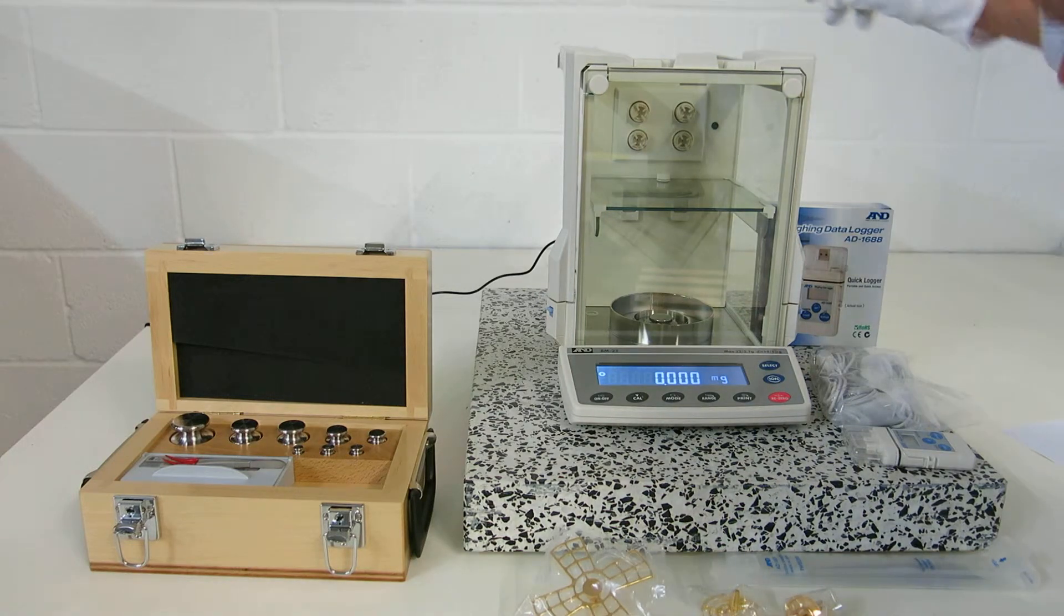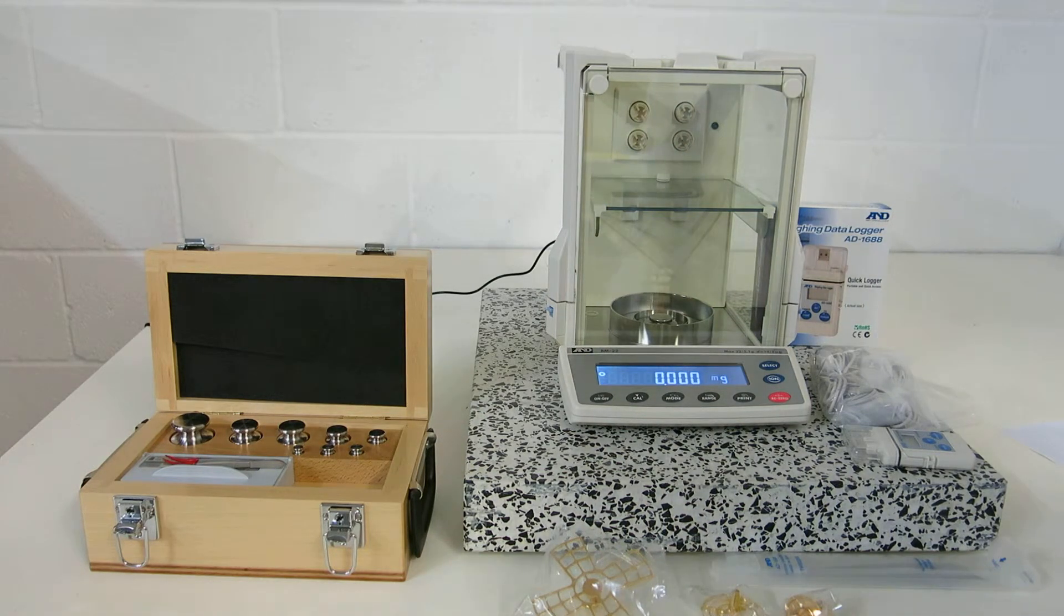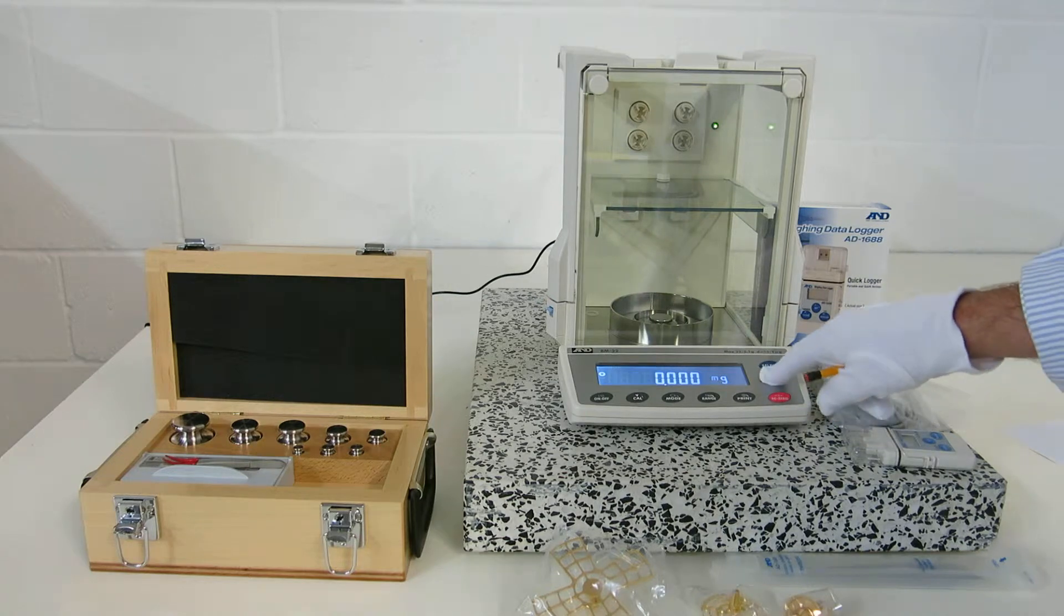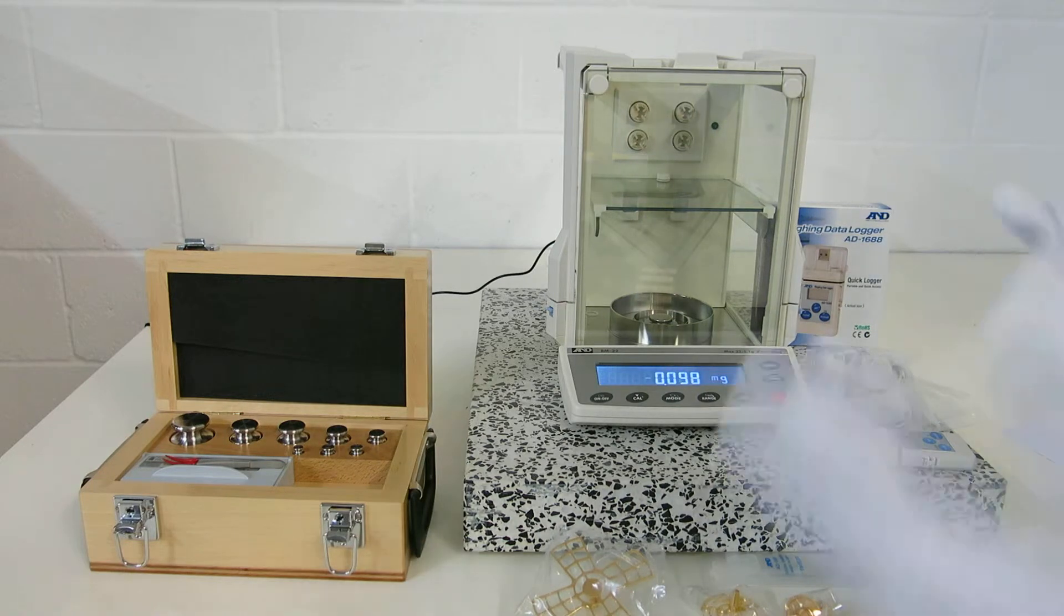It's also got a built-in fanless ionizer, which are here. One of the biggest problems are errors due to static electricity, and the beauty with this is if you press the ION button here, which is the green button you can see, you run the sample in front of it, that neutralizes it, and you don't get any of the errors traditionally associated with static electricity.